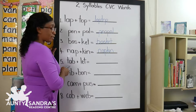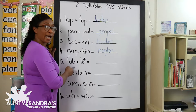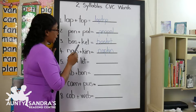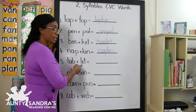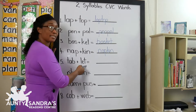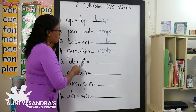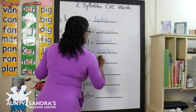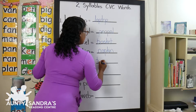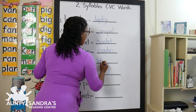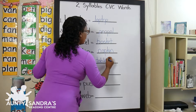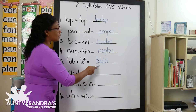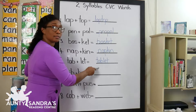The next syllable is T-A-B, Tab. And the second syllable is L-E-T, Let. Now we are going to join the two syllables together and we get T-A-B, Tab, L-E-T, Let. Put that together and you get tablet. Tablet.